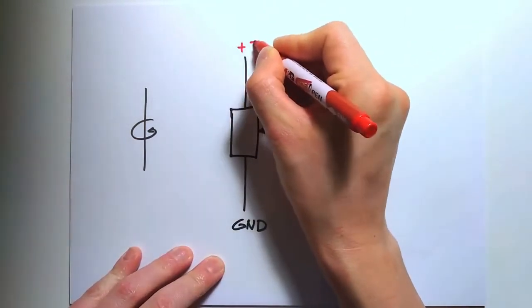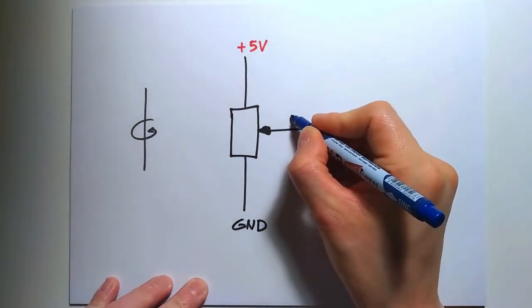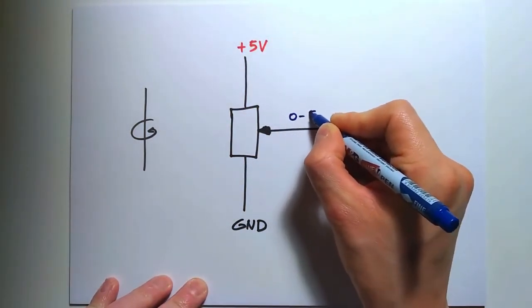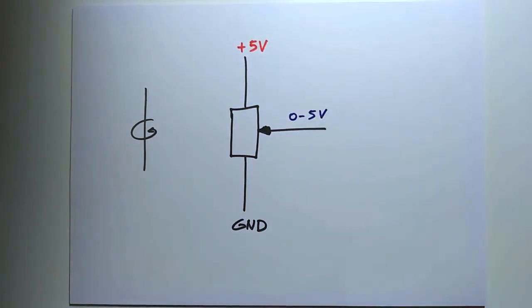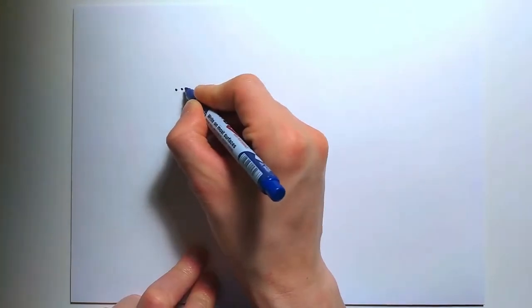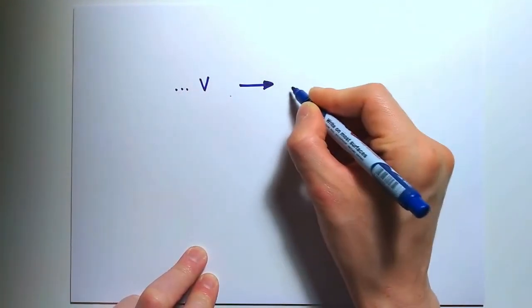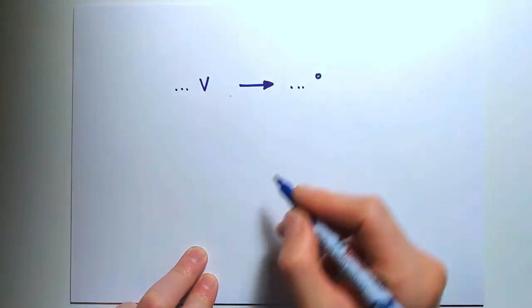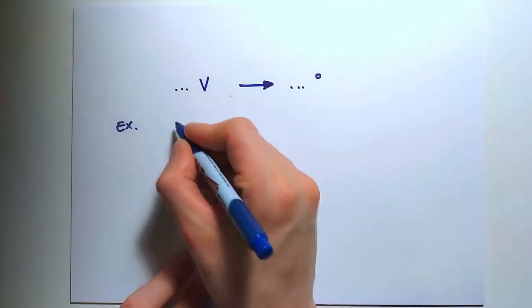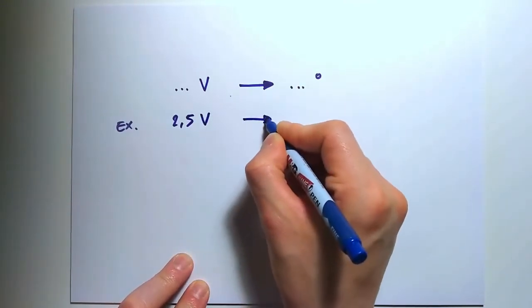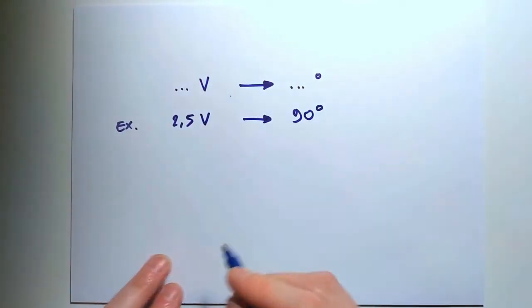That means the voltage at the middle pin will vary somewhere between 0 and 5 volts, depending on the position of the output shaft. The servo electronics knows that a certain voltage at the voltage divider corresponds to a certain position of the shaft.